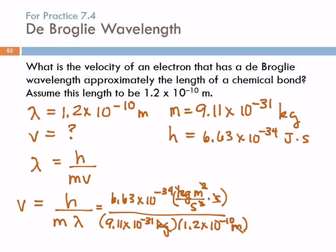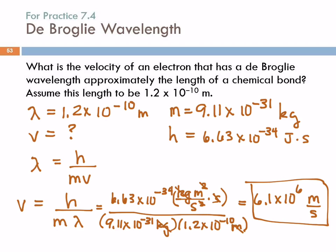It's a matter of putting this into your calculator: 6.63 EE −34 divided by 9.11 EE −31 divided by 1.2 EE −10. I want to see this in scientific notation. We have 2 significant figures, giving us 6.1 × 10⁶ meters per second. Especially for a calculation like that, punch it through your calculator twice and make sure you come up with the same answer.